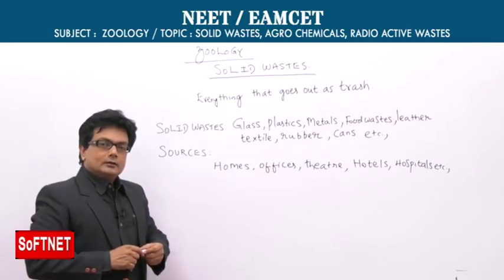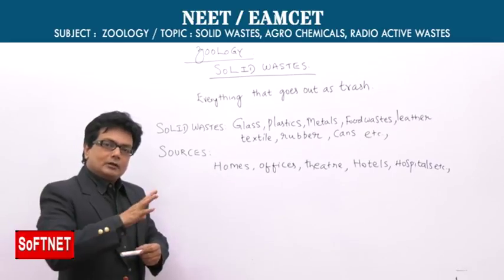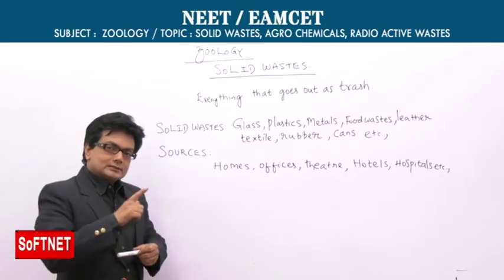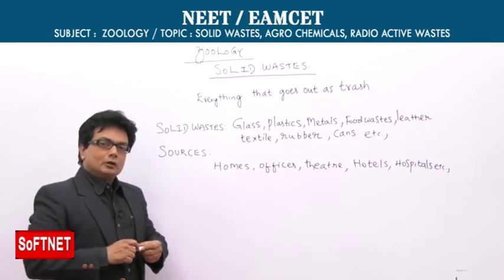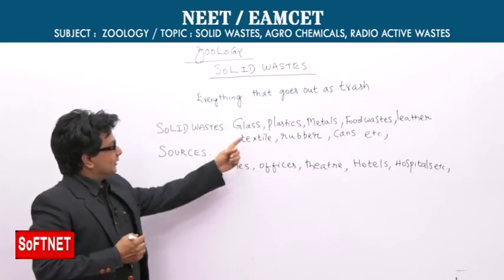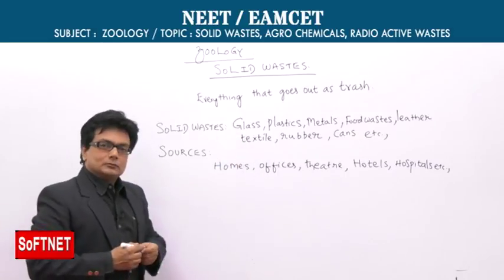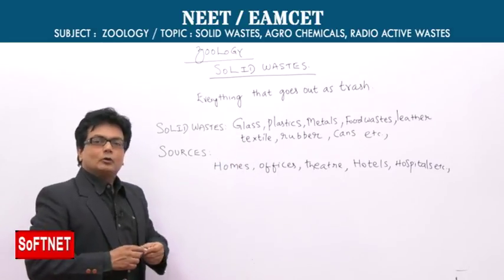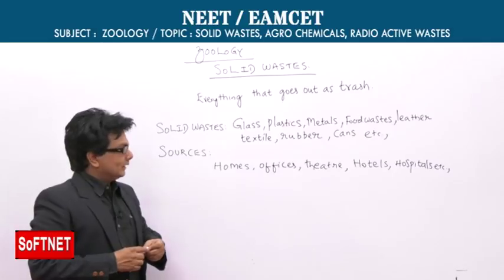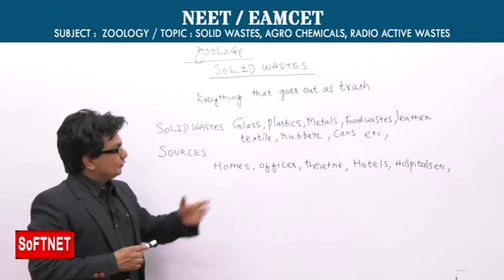Some of them are biodegradable and some of them are non-biodegradable. For example, glass is definitely a non-biodegradable material, while food waste is biodegradable.